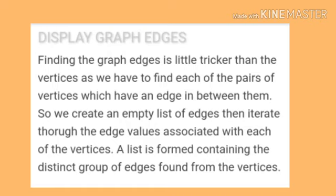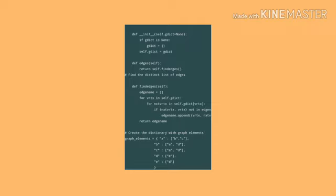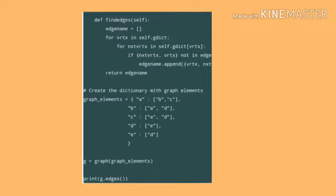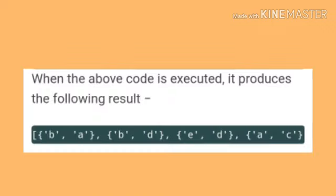Next is display graph edges. Finding the graph edges is a little trickier than vertices, as we have to find each of the pairs of vertices which have an edge in between them. So, we create an empty list of edges, then iterate through the edge values associated with each of the vertices. A list is formed containing the distinct group of edges that is found from the vertices. Here is the class graph. Find the distinct list of edges. Create a dictionary with graph elements. When the above code is executed, it produces the following result.